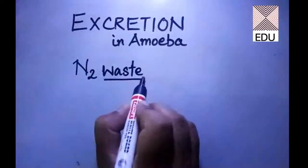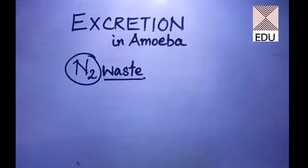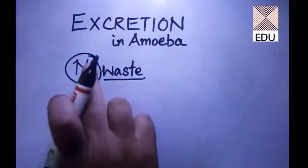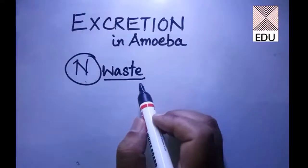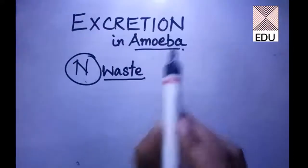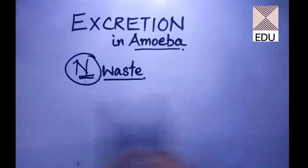The waste should contain nitrogen, so nitrogenous waste. The removal of nitrogenous waste is excretion. How amoeba produces this nitrogen and how it is thrown out of the body will be our topic.